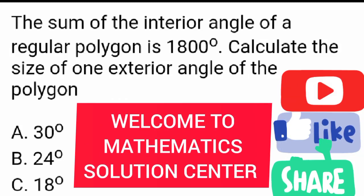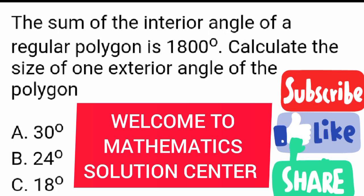Good day once again everyone and welcome to Mathematics Solution Center. Today we are going to be looking at a question that says the sum of the interior angles of a regular polygon is 1,800 degrees. Calculate the size of one exterior angle of the polygon.